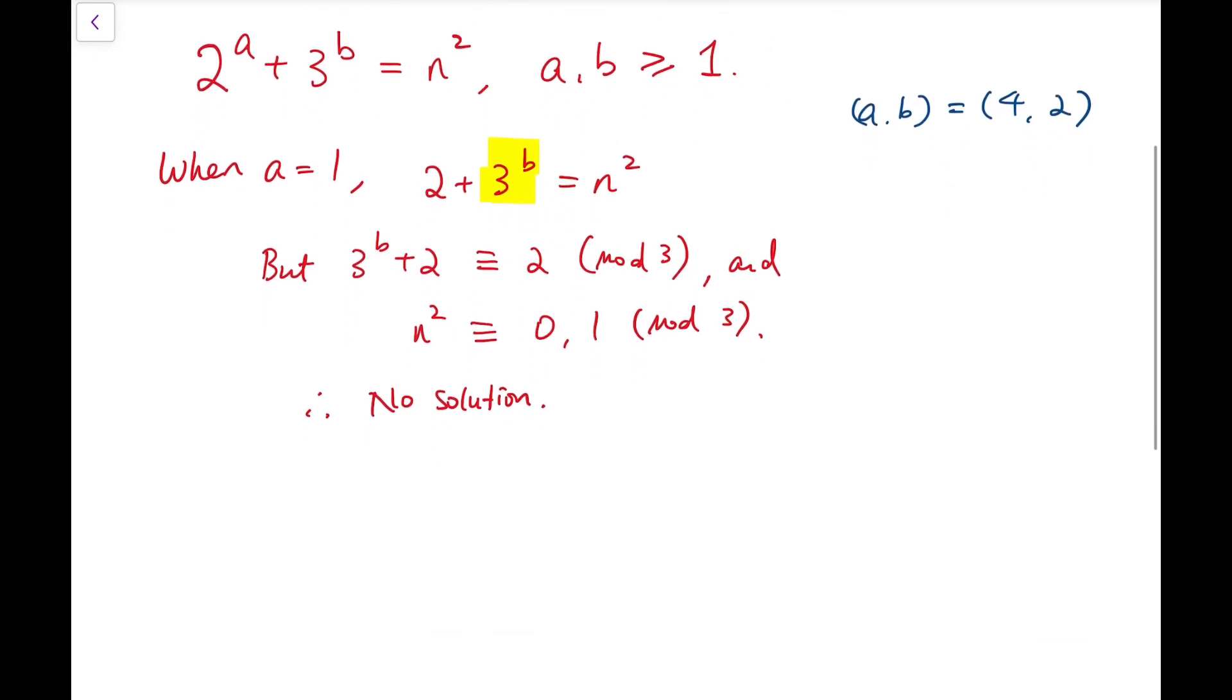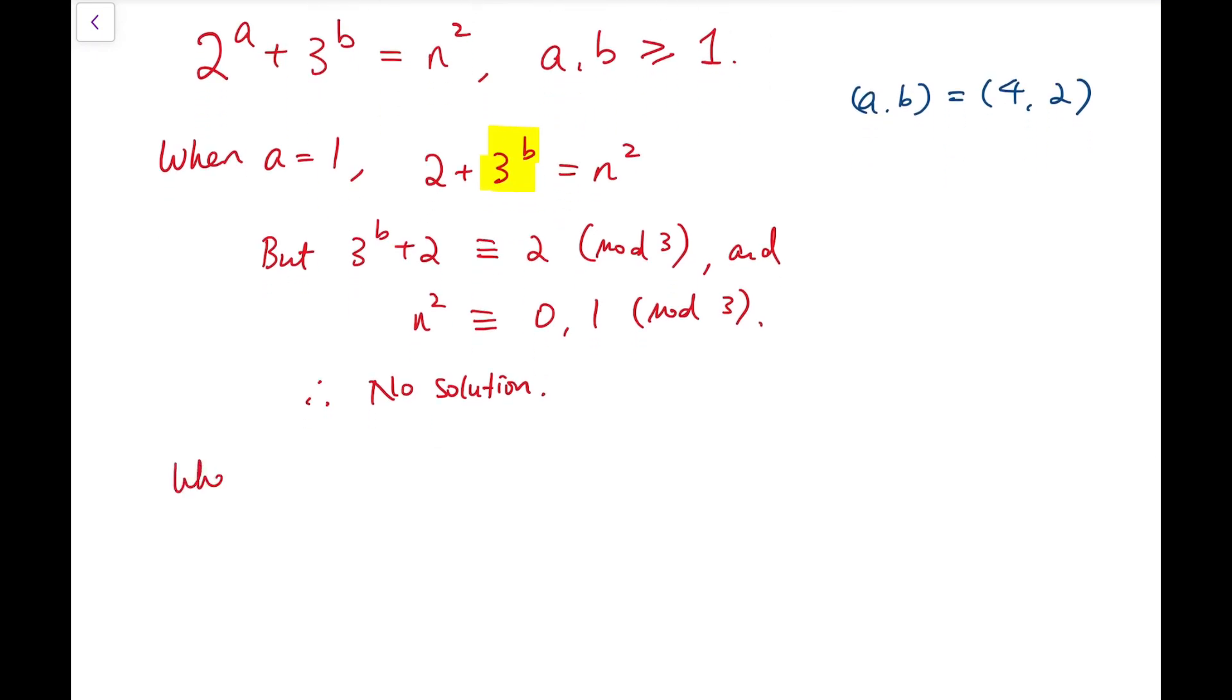But a similar strategy won't work when a takes larger values because when a is at least 2, then 2 to the power of a is then not just an even number, but it's a multiple of 4.